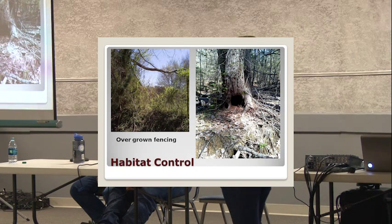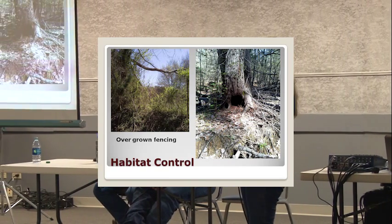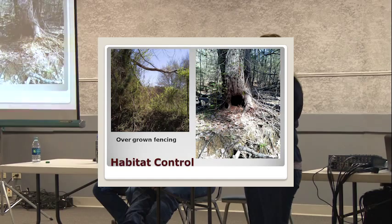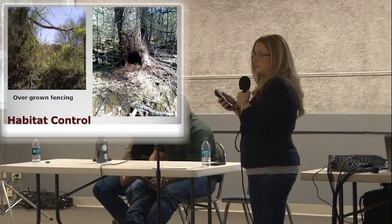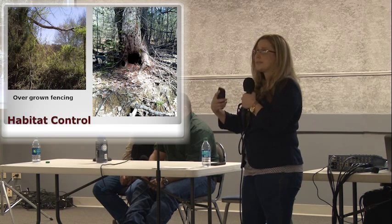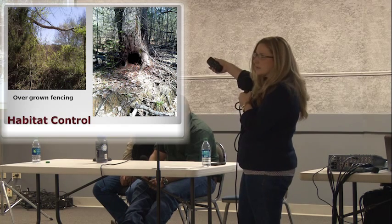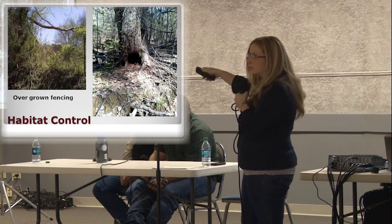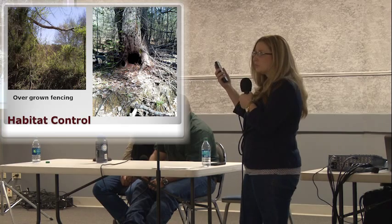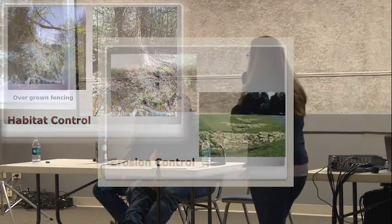Some examples of habitat control: this is far different from timber. On timber, you're wanting to keep clear fence lines. On wildlife, you don't necessarily want clear fence lines — you want overgrowth because that creates habitat for certain animals. Also, this tree has a burrow in the bottom, and leaving those present on the property encourages habitat for animals as well.